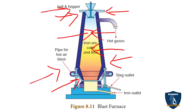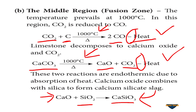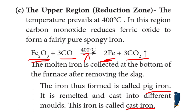To summarize the blast furnace: in the combustion zone at 1500°C, coke produces carbon dioxide. In the fusion zone at 1000°C, carbon dioxide is reduced to carbon monoxide and calcium carbonate forms calcium oxide — both endothermic reactions. Calcium oxide reacts with silica to form slag. In the upper zone at 400°C, carbon monoxide reduces ferric oxide to spongy iron, which is the pig iron, later remelted to form cast iron.